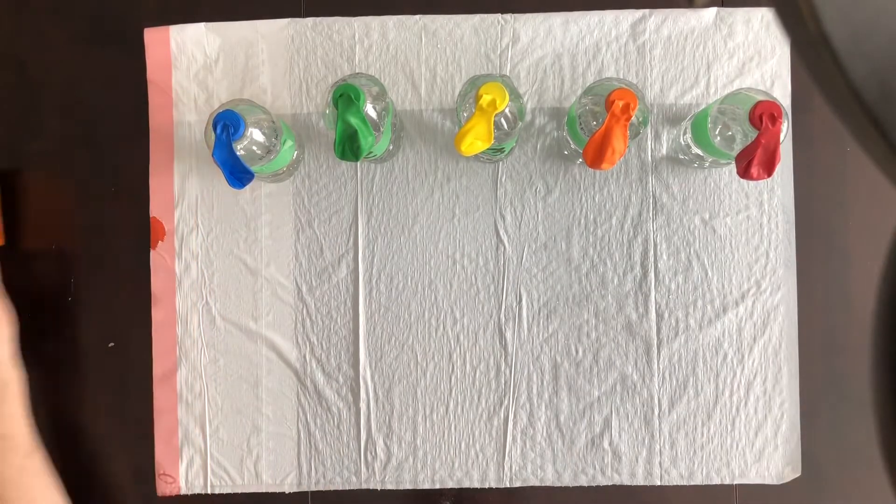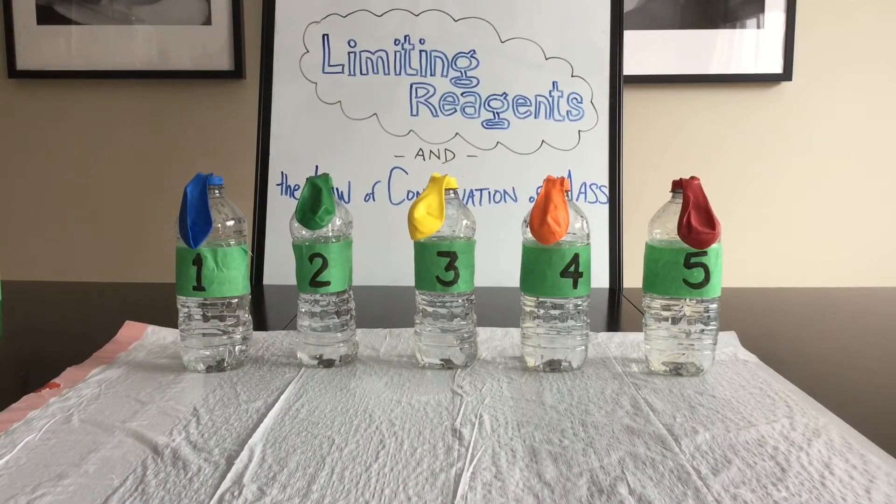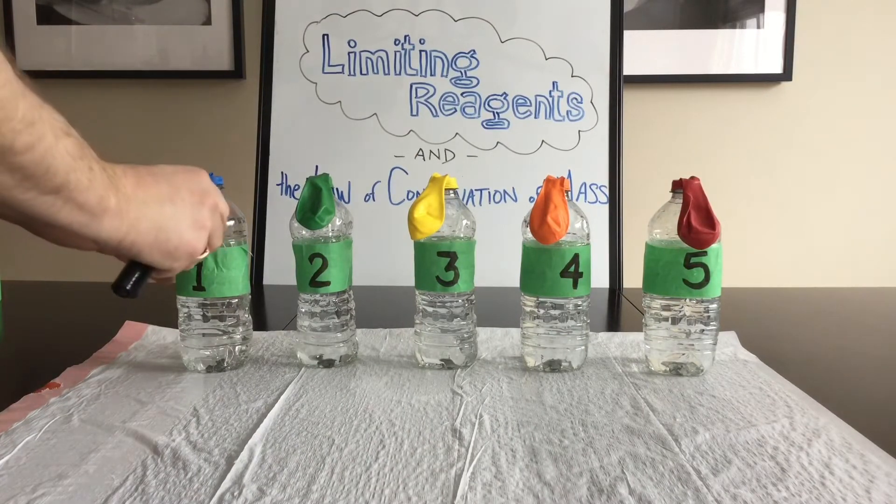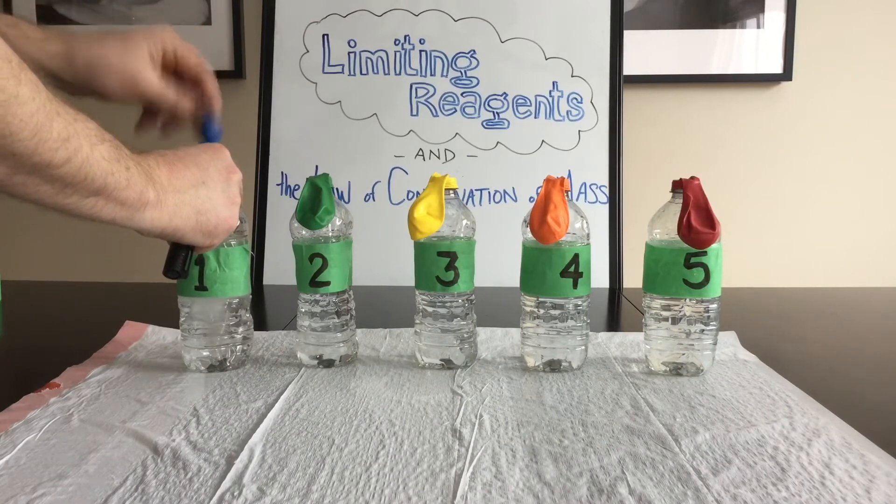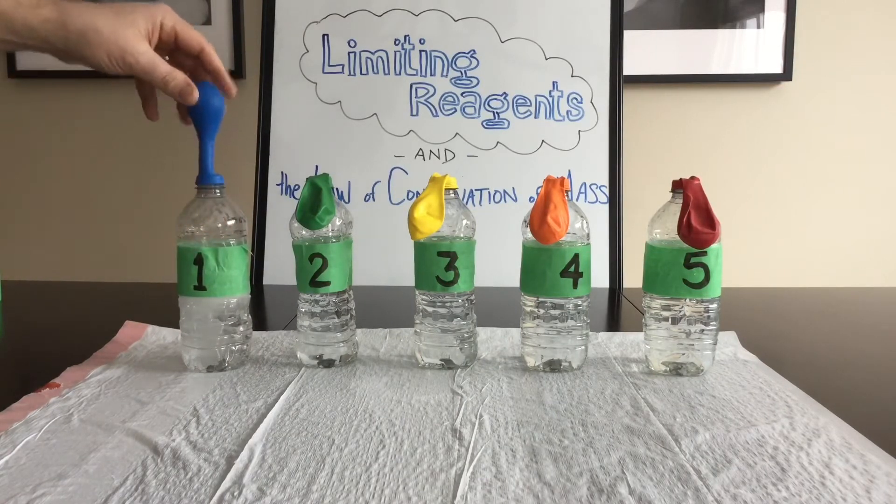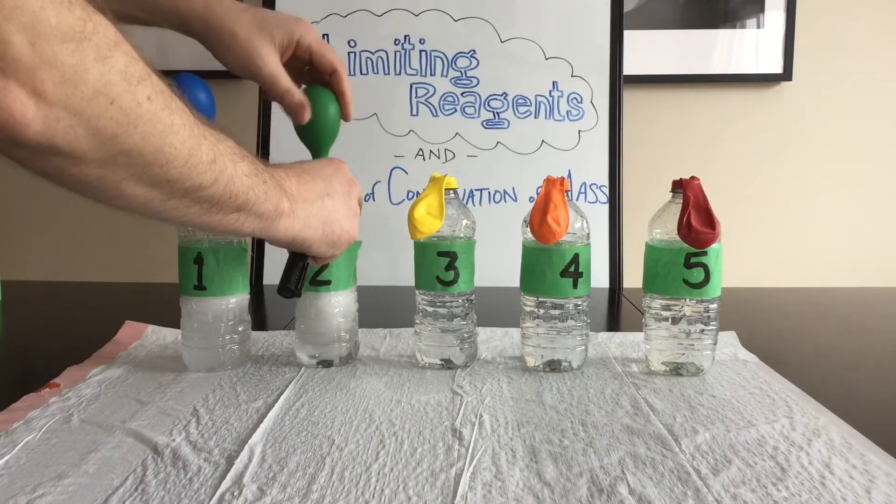We'll show you what this looks like from the side to give you a better idea. We'll just move all this stuff out of the way first and take a look from the side. You see how the balloons are hanging down? The spot where they're hanging down is where the baking soda is. So if you lift up the balloons like this, the baking soda just drops into the bottle. You may have to shake the balloon a little bit to encourage it to drop.